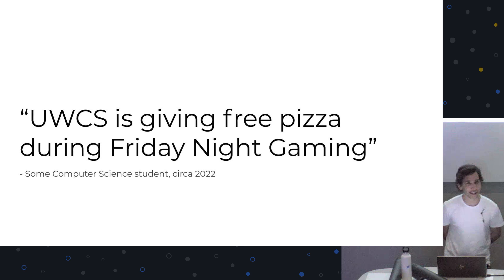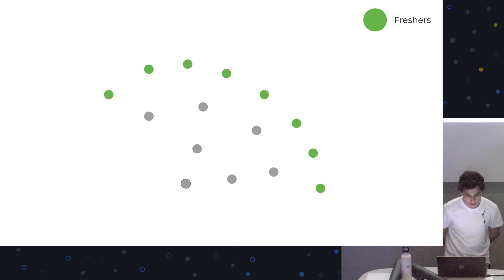I overheard a rumor that the computing society is giving free pizza during Friday night gaming this week, and this was some random computer science student. If we were to look at this from the top of campus, and you could see everyone speaking with each other, we would have something like a graph. Each node is just a person, and we have the freshers marked as green nodes, and the node at the bottom is the person, the first person who overheard the rumor.